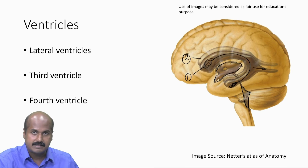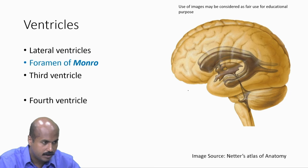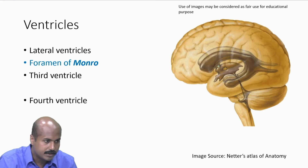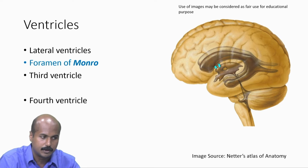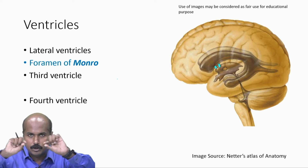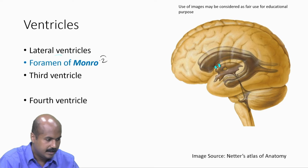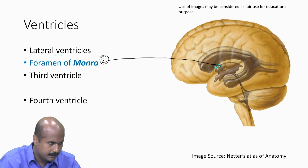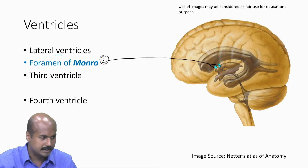The two lateral ventricles do not communicate with each other, but they communicate with the third ventricle through the foramen of Monroe. You can see two small canals — the foramen of Monroe — one from each lateral ventricle, communicating into the midline third ventricle. So the foramen of Monroe are two in number, located close to each other near the midline.